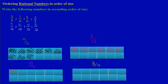Now I'm going to shade ten out of twelve on the third bar — that's one, two, three, four, five, six, seven, eight, nine, ten parts shaded. And on the fourth bar I'm shading eight out of twelve — one, two, three, four, five, six, seven, eight parts. There we go.